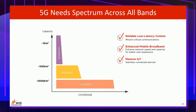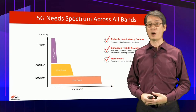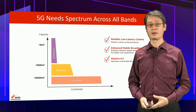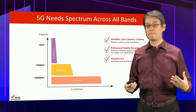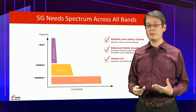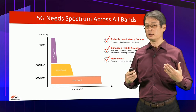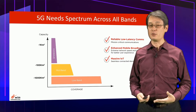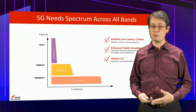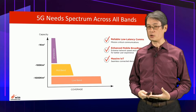However, millimeter wave coverage is very limited. At the same time, 5G also needs lower frequency bands — referred to as sub-6 GHz — to support wide coverage. Both millimeter wave and sub-6 GHz are required to make a complete 5G network.